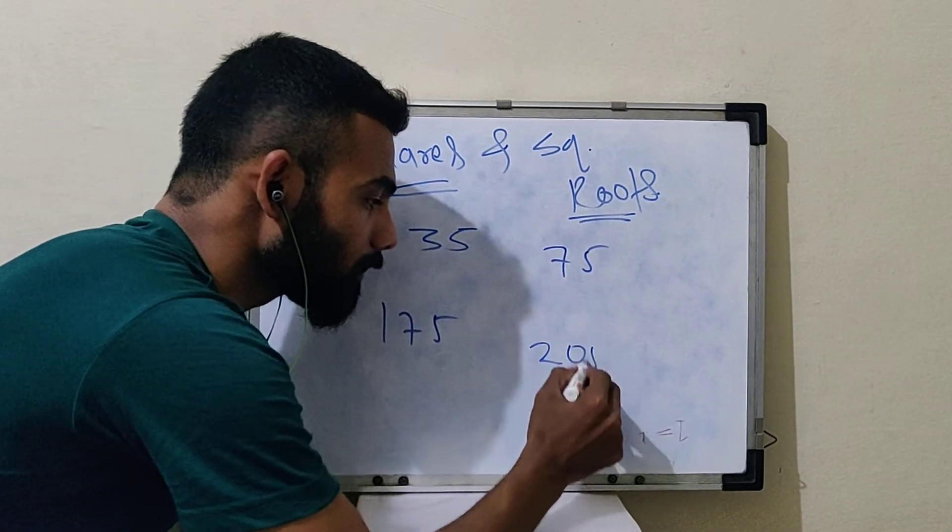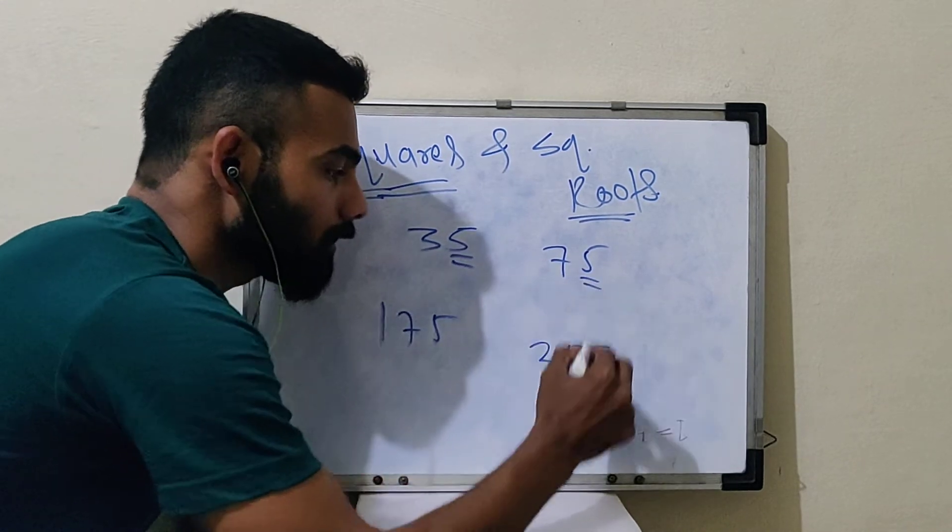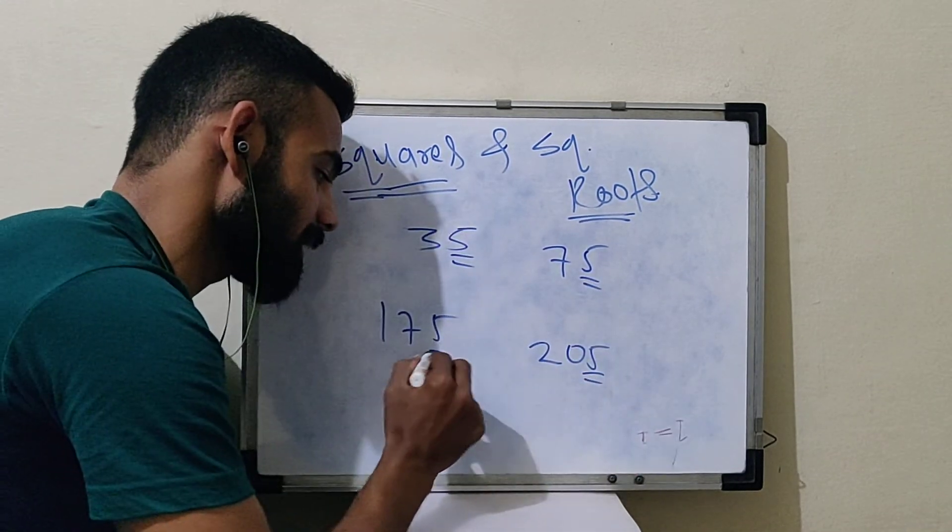Or 75, or 205. So all these numbers are ending with five. How do we take squares to this?